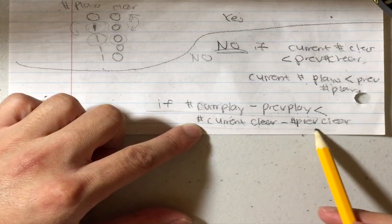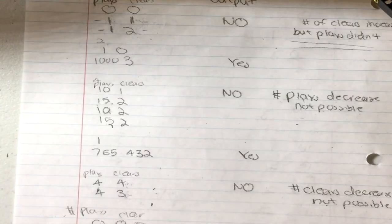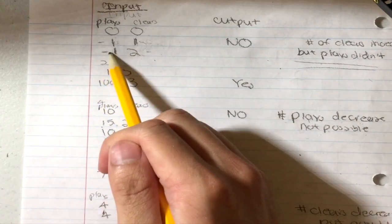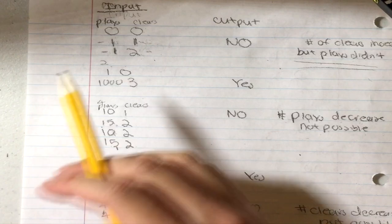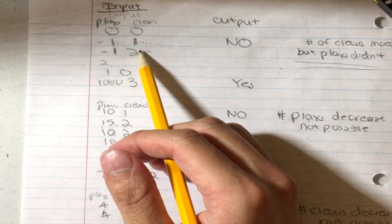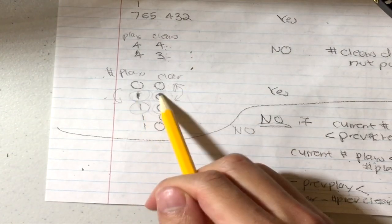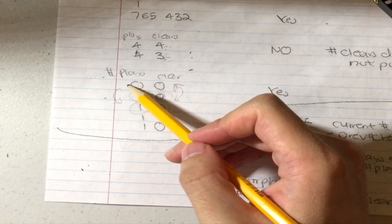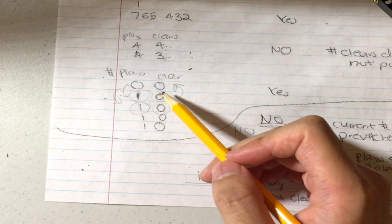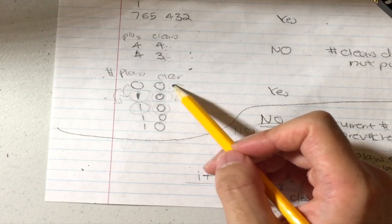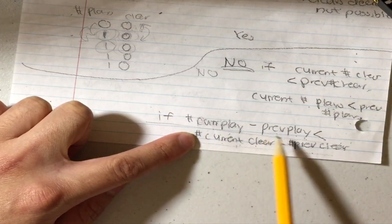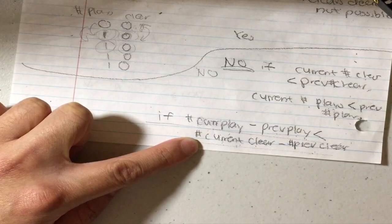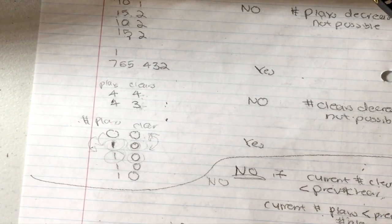If the difference between current plays and previous plays is less than the difference between current clears and previous clears, it's not possible. To summarize, those are the three cases: plays decreased, clears decreased, or the increase in plays is less than the increase in clears.